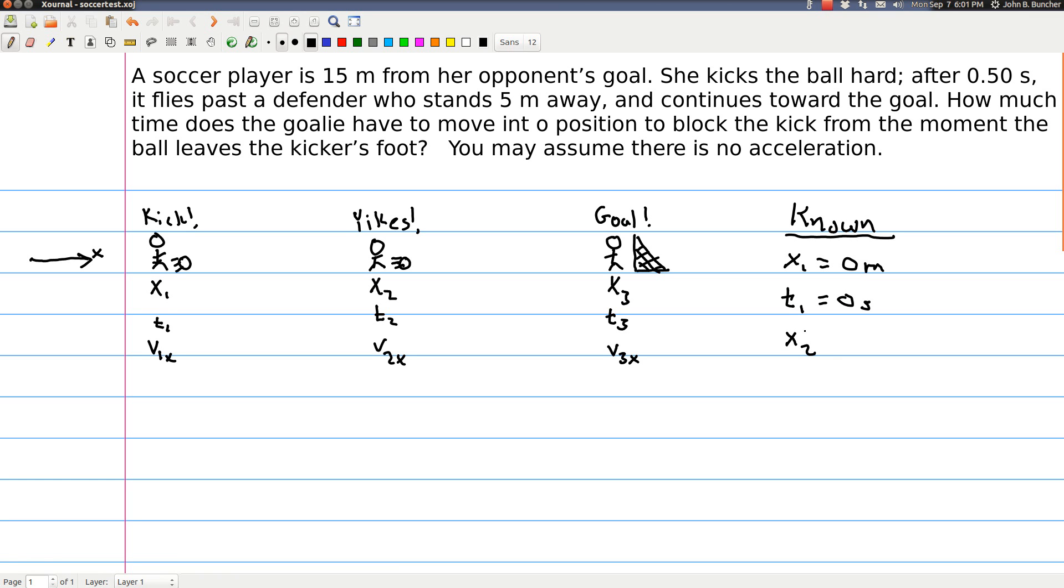x2, we're told, is when the ball flies past the defender, which is five meters away. And that happens half a second later. And we're told the goal, or x3, is 15 meters away from x1. Alright, so it's at 15 meters. Okay. Alright, so that's all the numbers that we know at the moment.